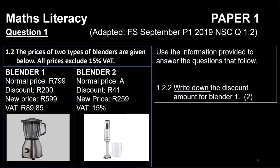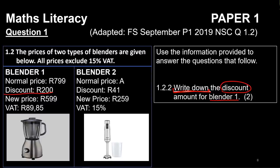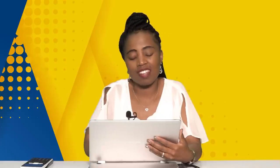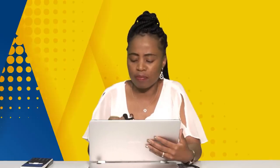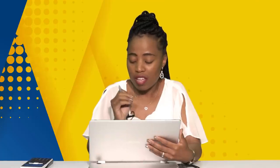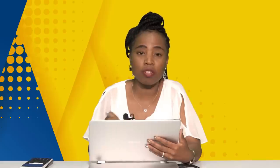Another question might ask you to write down the discount amount for blender one. Write down means exactly that — no calculations necessary. Just go back to the table, look for the discount for blender number one, put it down in your answer sheet, and you get two marks for that. The discount is 200 rands. Your keywords are very important — if you understand what 'write down' means, you're not going to go looking for values to subtract or add.